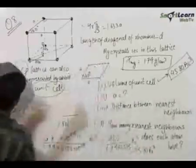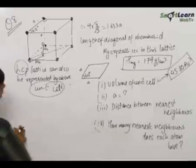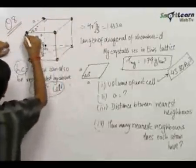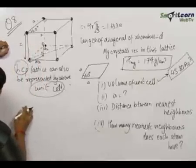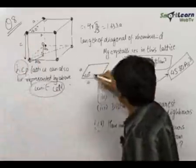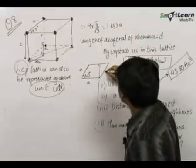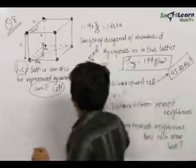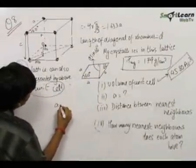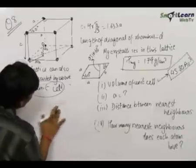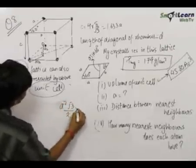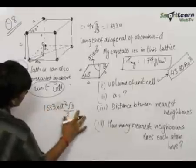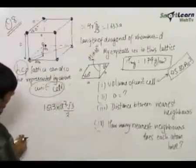For the second part, we need to find the unit cell length A. We can represent the volume in terms of A. The volume of this unit cell equals the area of the base times the height C. The area of the rhombus base equals A × A sin 60° = A² × (√3/2). Multiplying by C, where C = 1.633A, the volume becomes A³ × 1.633 × (√3/2). We know this equals 45.80 Å³.